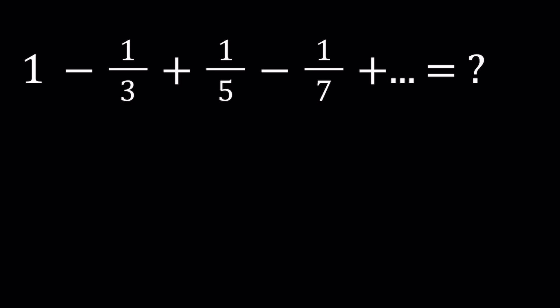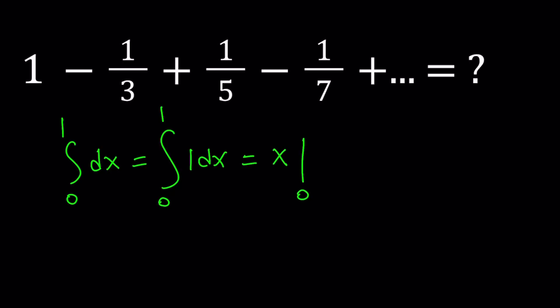As you know, when you have a definite integral, you're going to evaluate the integral by whatever method you use, and then plug in the boundary values. So the first integral I'm going to consider is from 0 to 1 of dx — we're basically integrating 1. The integral of 1 is just x, and plugging in the bounds gives you 1 minus 0, which is 1.